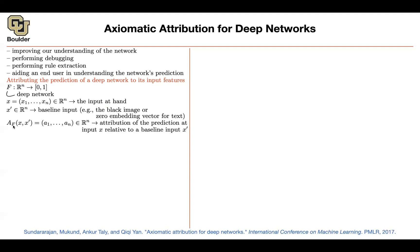So this A is going to be a function of your neural network that you're analyzing, the current input that you want to study, and some baseline. And each component of your A, A is a vector, each component is going to correspond to every single pixel in your image.